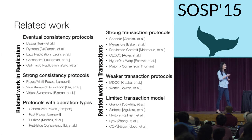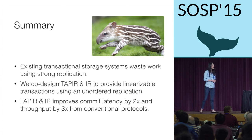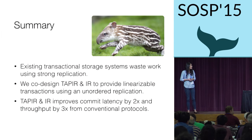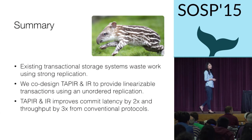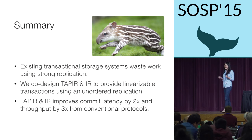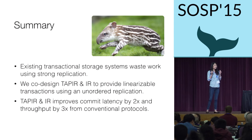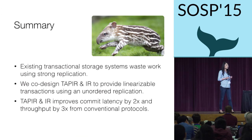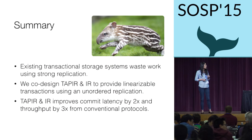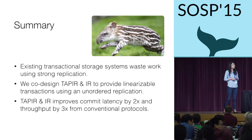To wrap up: we showed that existing transactional storage systems are wasting work by using strong replication with a strong transaction protocol. Instead, we co-designed TAPIR and IR to provide linearizable transaction ordering using completely unordered operations. In doing so, we were able to improve throughput by 3x and reduce commit latency by 2x compared to conventional protocols. Thank you, and I'll take questions.